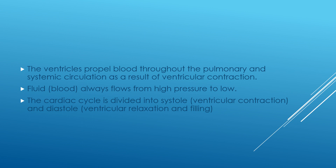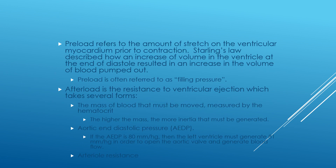The ventricles propel the blood throughout the pulmonary and systemic circulation as a result of ventricular contraction. Fluid blood always flows from high pressure to low pressure. The cardiac cycle is divided into systole, the ventricular contraction, and diastole, the ventricular relaxation and filling. Pre-load refers to the amount of stretch on the ventricular myocardium prior to contraction. Starling's law describes how an increase in the volume in the ventricle at the end of diastole results in an increase in the volume of blood pumped out. Pre-load is often referred to as filling pressure.